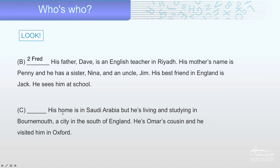Description C: his home is in Iraq but he is living and studying in Berkman, a city in the south of England. He is Omar's cousin and he visited him in Oxford.